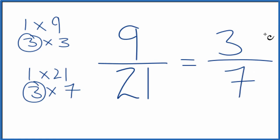And we can't simplify this any further. So we are done. We reduced and simplified 9 21sts down to 3 7ths. These are equivalent fractions. If you divide 9 by 21 and 3 by 7, you get the same value. It's just that we've simplified or reduced 9 21sts down to 3 7ths.